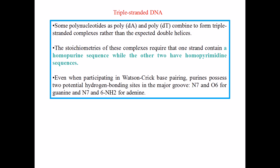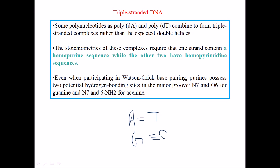To make this kind of triple-stranded bond, we need a different type of interaction between those bases, which we call Hoogsteen base pairing. Hoogsteen base pairing is slightly different from Watson-Crick pairing. In Watson-Crick pairing, adenine pairs with thymine and guanine pairs with cytosine — one purine with one pyrimidine.